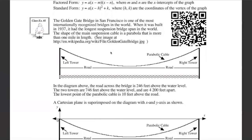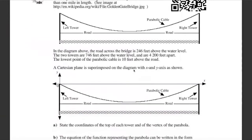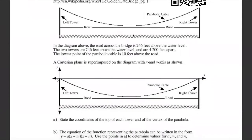Let's take a look at class example one. We have the Golden Gate Bridge in San Francisco, one of the most internationally recognized bridges in the world, built in 1937. We have a picture where the left tower is at a certain height, and there's a parabolic cable that runs down almost touching the road and then back up to the right tower. In the diagram, the road is 246 feet above the water level, the two towers are 746 feet above the water level, they are 4200 feet apart, and the lowest point of the parabolic cable is 10 feet above the road.